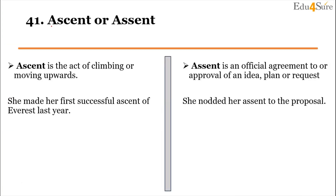Our first word pair is 'ascent' or 'assent' — both have a difference between C and S. Ascent is the act of climbing or moving upwards; basically, ascent means to climb up. For example: 'She made her first successful ascent of Everest last year,' meaning she did her first successful climb on Everest last year.